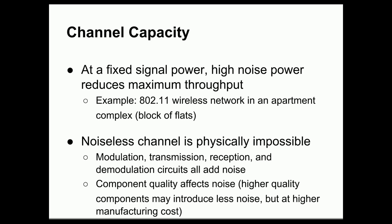A noiseless channel, a completely noiseless channel, is physically impossible because modulation, transmission, reception, and demodulation circuits all add noise. And even if we're sending data down a cable or down a fiber optic line, properties of the materials themselves introduce a certain amount of noise in the signal. Now the component quality does affect the amount of noise that is introduced. Higher quality components, for example, will tend to introduce less noise. But higher quality components have a higher manufacturing cost. And so we have to consider the economic realities of how much noise is acceptable for a given application based upon the price of the components that we would need in order to reduce that amount of noise.